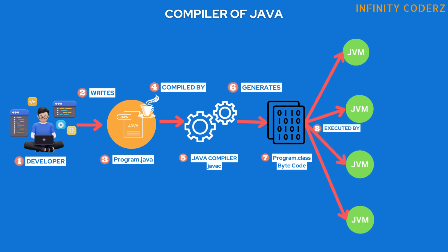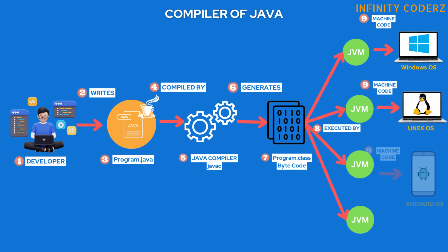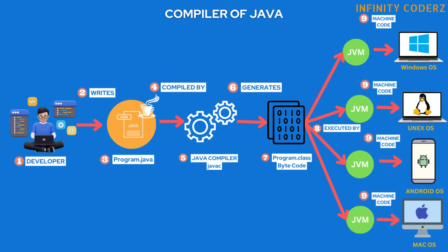It's important to note that the JVM is responsible for executing Java programs on different platforms — examples shown here include Windows OS, Unix OS, Android OS, and Mac OS. This allows Java programs to be highly portable, as the JVM abstracts away the underlying hardware and operating system differences. Each time the Java program is executed, the steps from compilation to execution are followed, ensuring that the code is converted into machine instructions that the computer can understand and execute.